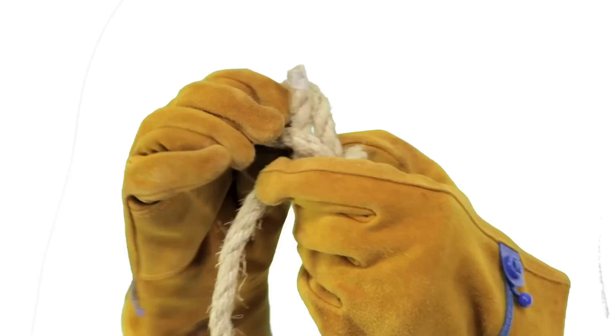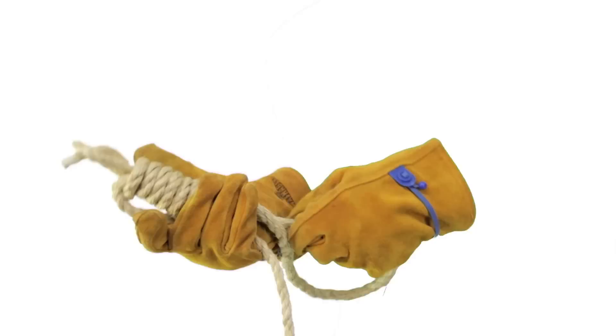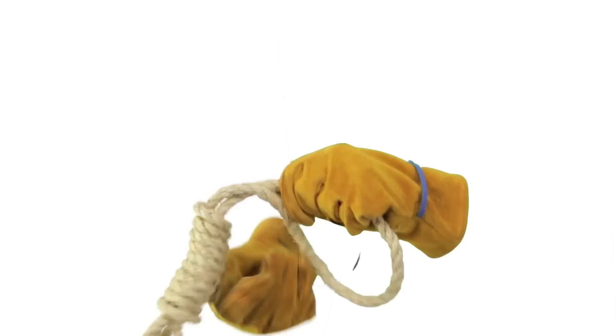Pulling one side of the working end loop will widen the noose, and pulling the other side will tighten the knot. Adjust as you see fit, then tighten and there it is, you've just made the hangman's noose.